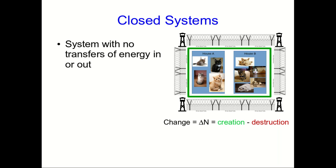So we need a name for that. Just like we called a system with no input or output of momentum an isolated system, we're going to call a system with no energy input or output a closed system. And let's look at a quick example.